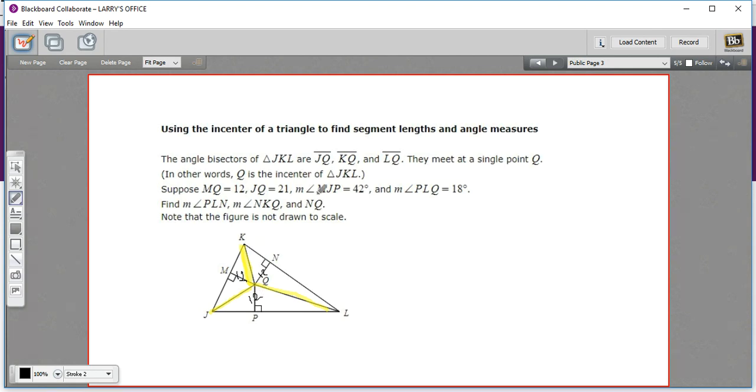And it says MJP, angle MJP. So this whole thing is 42. And the measure of angle PLQ, PLQ is just this little half of this one, is 18.